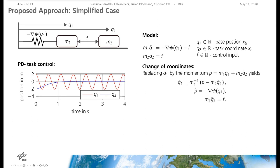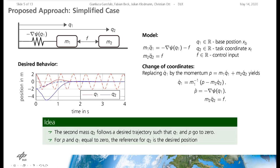A change of coordinates replacing the velocity of the first mass by the overall linear momentum p yields an input-decoupled system. Here the dynamics of the base position and the momentum do not depend on the control input. The second mass can be steered using the internal force F. The idea is to find a trajectory for the second mass such that the first mass and the momentum go to zero. To guarantee that the task is achieved, the trajectory is chosen such that the reference for the second mass corresponds to the desired position when the momentum is zero and the base is at rest.